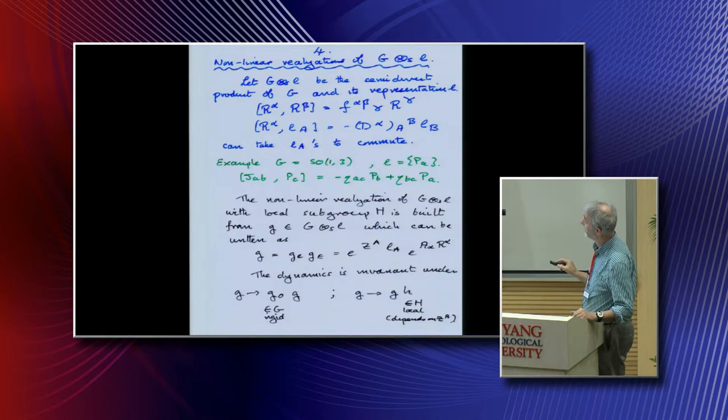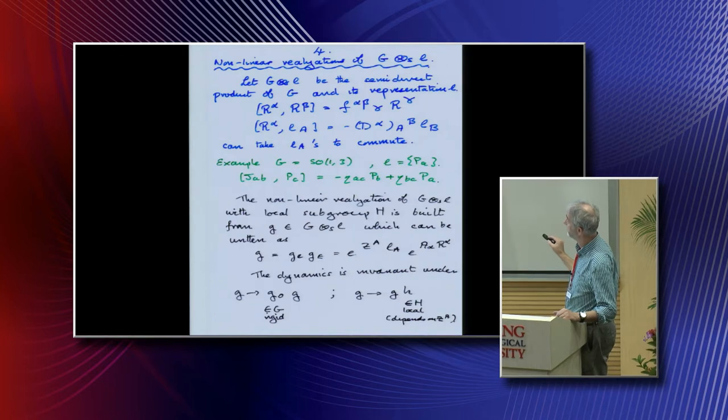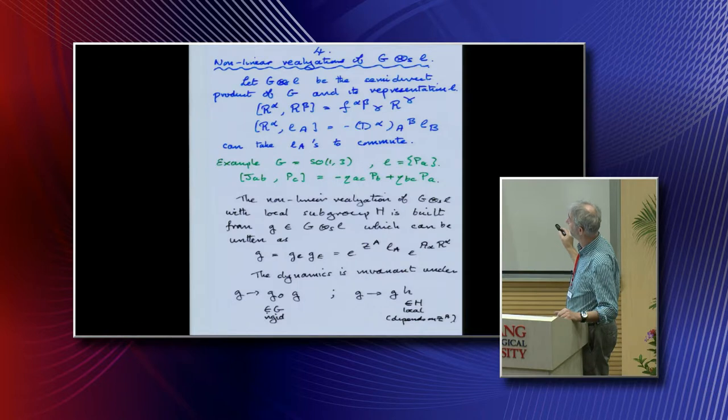What I'm going to do is unify all these theories. For this we're going to do a non-linear realization of this group G, semi-direct product with L1. In the first line we have the normal Lie algebra of G, and in the next line we have this representation L. For every element in here we take a generator LA, and this commutation relation with G is just the representation matrix. For the L's we'll just take them to commute.